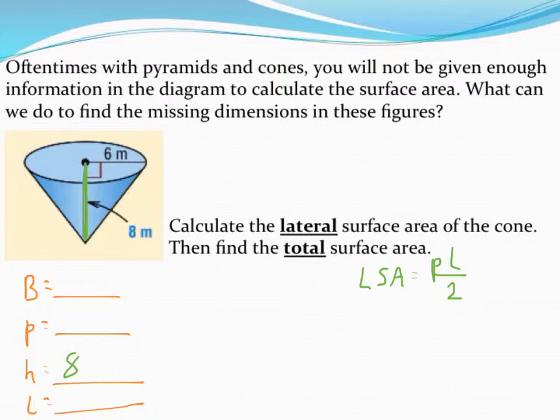The slant height, though, is going to be the distance along the surface from the vertex down to the base. So that's the number I need to find, and if you don't have that, you cannot find surface area. So let's figure out what to do to find that value.